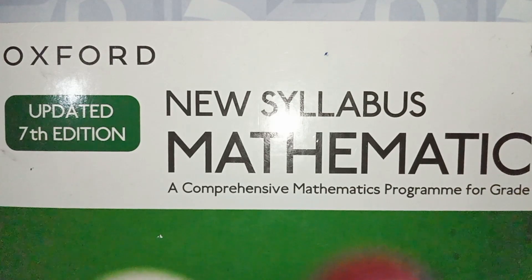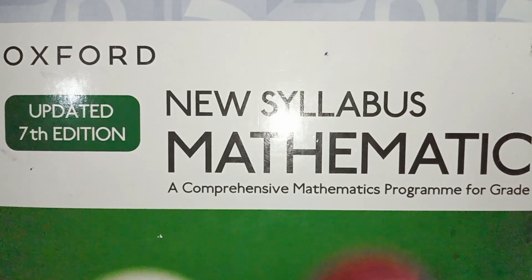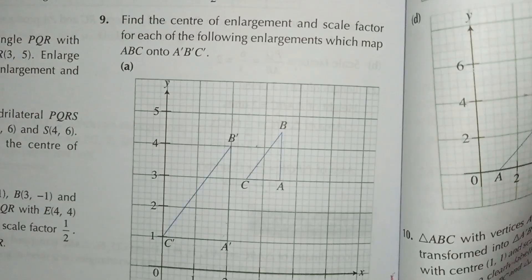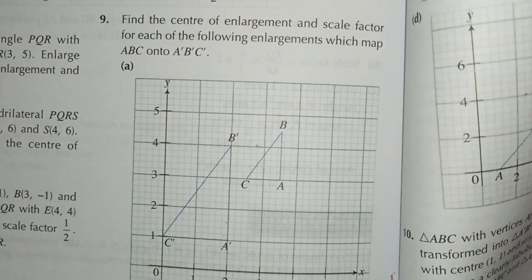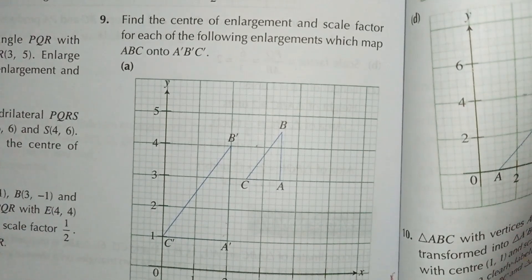This is the Mathematics Book D3, updated 7th edition, and today we will do Exercise 12B, question number 9 and 10. Let's start. Question number 9: find the center of enlargement and scale factor for each of the following enlargements which map ABC onto A prime B prime and C prime.